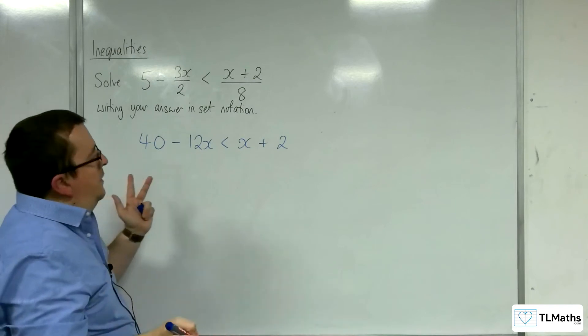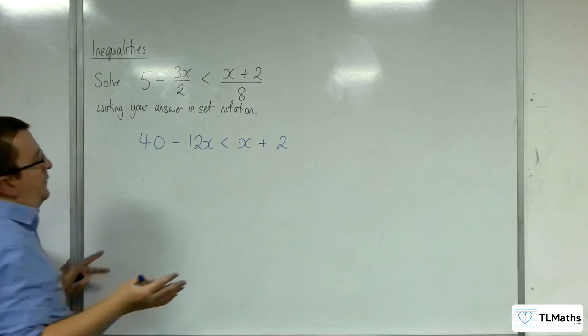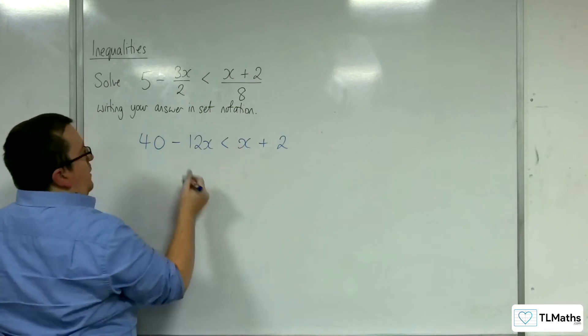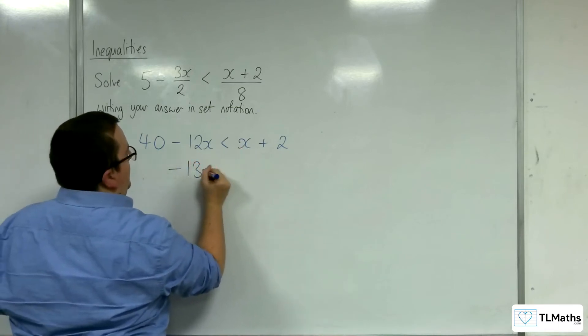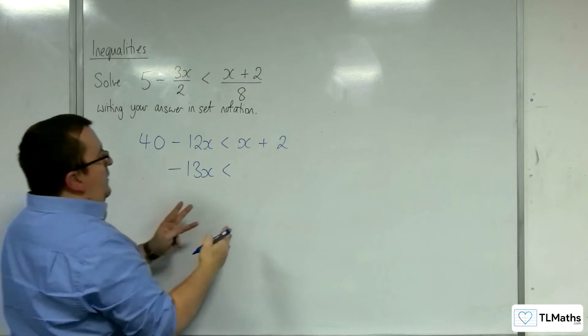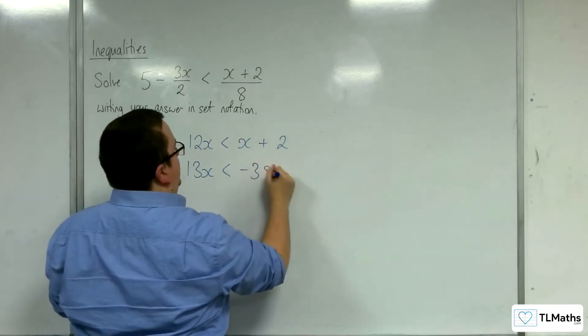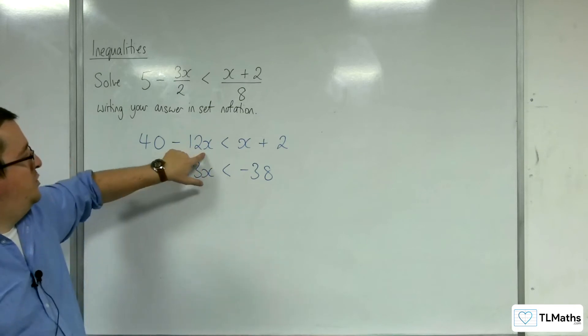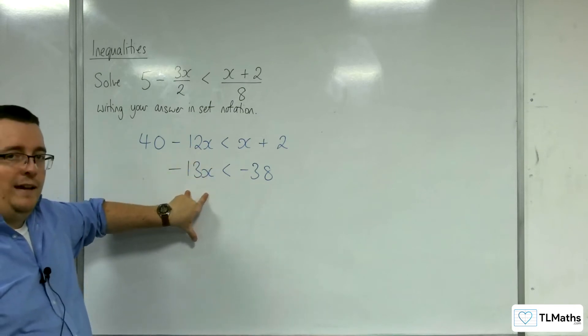Maybe it would be an idea just to do that, just for practice's sake. If I take 40 from both sides and take x from both sides, I'm going to get -13x < -38. So 2 - 40 is -38, and -12x - x is -13x.